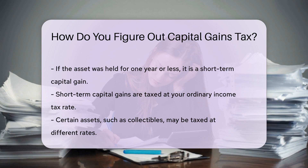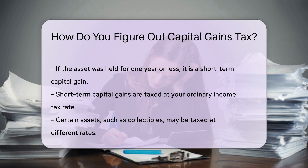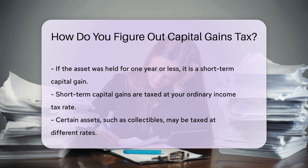Short-term capital gains are taxed at your ordinary income tax rate. And certain assets, such as collectibles, may be taxed at different rates.